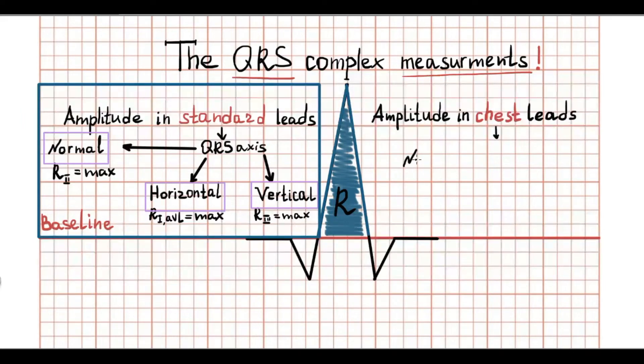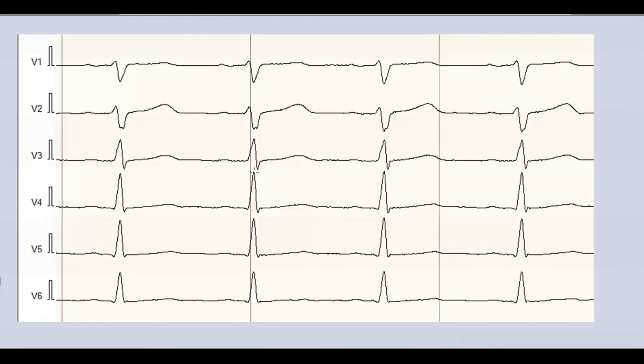In chest leads, R waves are characterized by normal R wave progression. It means amplitude of R waves should increase from minimal R in V1 to maximal R in V4. In V5 and V6, R should be smaller than in V4.